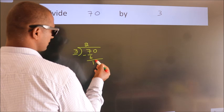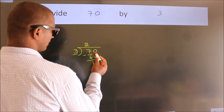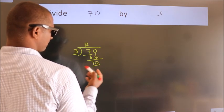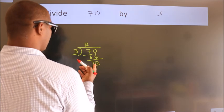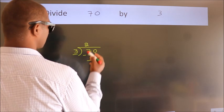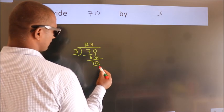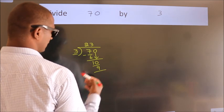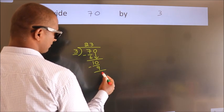After this, bring down the beside number. So, 0 down. So, 10. A number close to 10 in the 3 table is 3 times 3 is 9. Now, we subtract. We get 1.